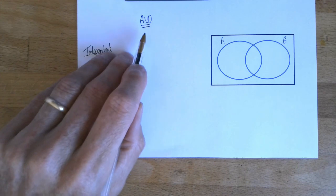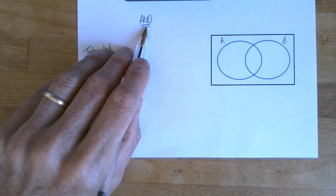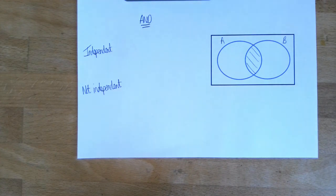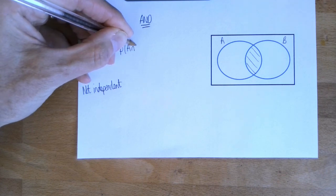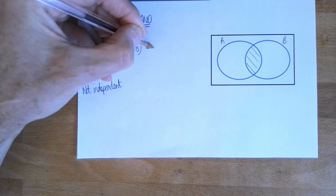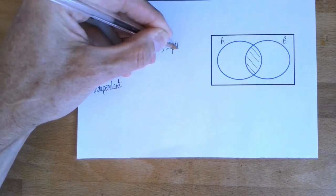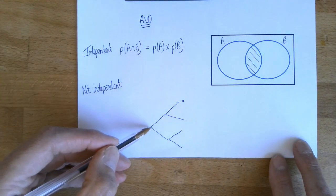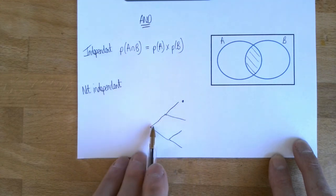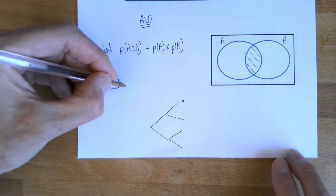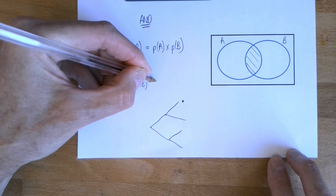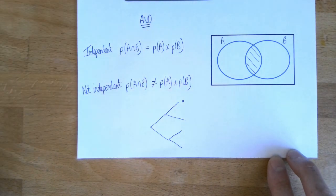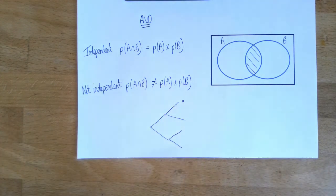Unlike mutually exclusive events, you can't tell from the Venn diagram whether events are independent. But there is a way to check: it's about the probability of the two things happening together — P(A intersection B). If the events are independent, that equals the two probabilities multiplied together, just like on a tree diagram. If the events are not independent, that does not equal P(A) times P(B).